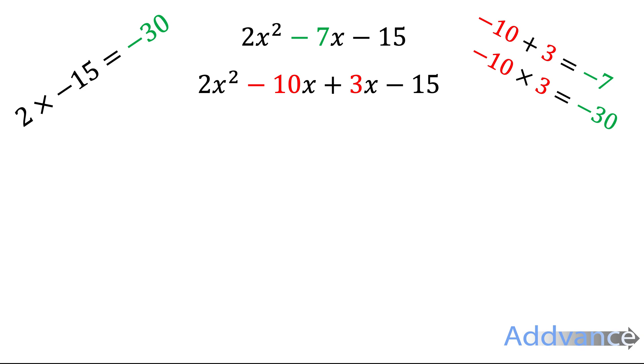So what we do is we split up the minus 7x into minus 10x and add 3x. So you should see that the minus 7x is the same as minus 10x and 3x. We split that up into two separate terms.